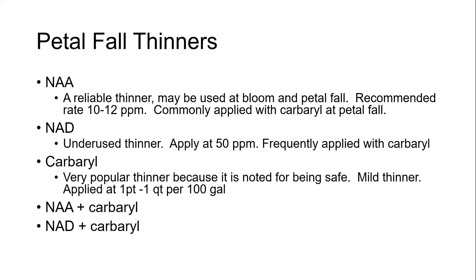Nearly all the same thinners are available at petal fall. The one not used at bloom is carbaryl. Carbaryl is popular primarily because it's safe and mild — applied at one pint to one quart per hundred gallons. However, if temperatures continue to trend lower, carbaryl alone will not get the job done. NAA is again a reliable thinner that may be used at bloom and petal fall; it's recommended at 10 to 12 parts per million and is commonly combined with carbaryl at petal fall for added boost.